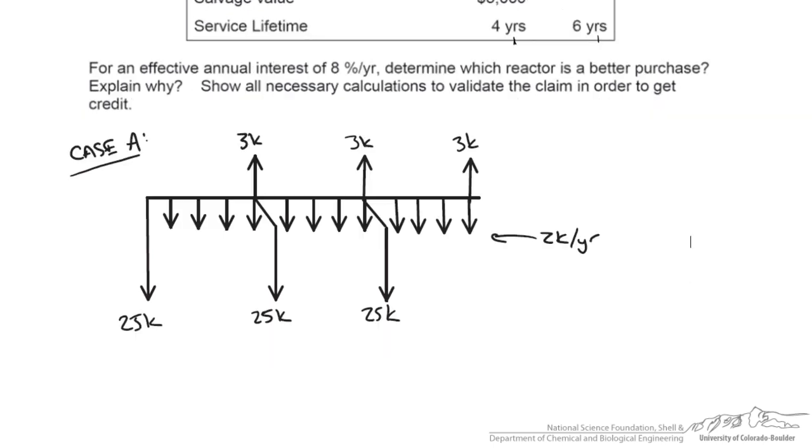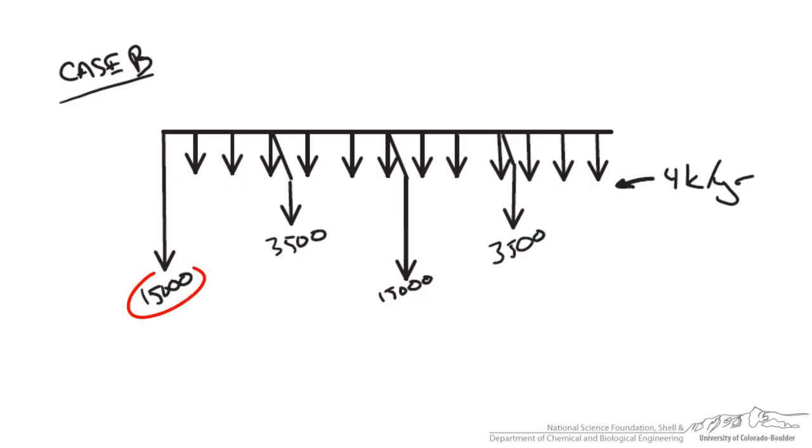So we can do the same thing for case B. Now you can see our initial cost and installation $15,000 is shown at our time zero, and every year after that, it's $4,000 a year for maintenance. Now we were told it's six year lifespan, so here's our six year mark.